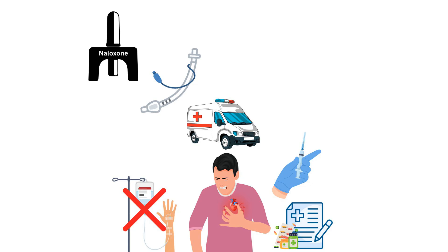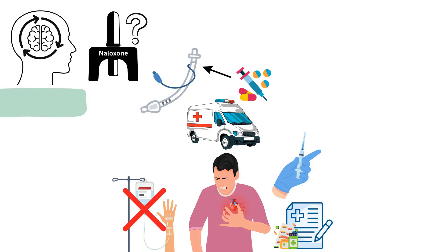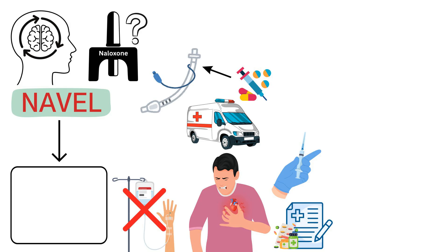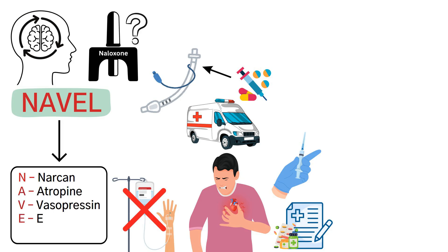To help you remember which drugs can be delivered through the ET tube, you can memorize the NAVAL mnemonic: N stands for Narcan, A for atropine, V for vasopressin, E for epinephrine, and L for lidocaine.